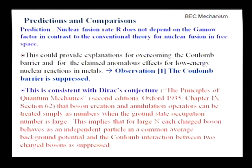Incidentally, this is consistent with the Dirac conjecture, which was made in this book, in this chapter. But what he noticed is that if the number of bosons are very large in the system, then the Coulomb annihilation operator can be treated as a simple number, which means that charged bosons, if you have many of them in the system, it behaves like an independent particle in a common average background potential, and the Coulomb interaction between two charged bosons is essentially suppressed. Now, this was a Dirac conjecture, and our results are consistent with this conjecture.